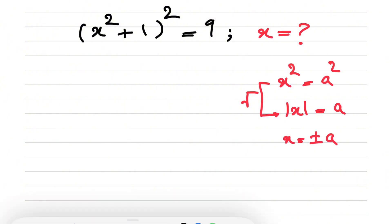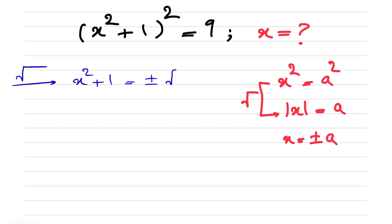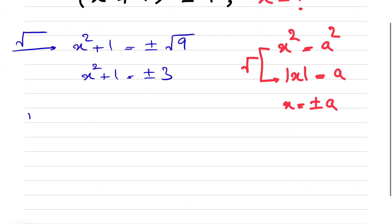Keeping that in mind, we take the square root on each side. We get x² + 1 = ±√9, so x² + 1 = ±3.